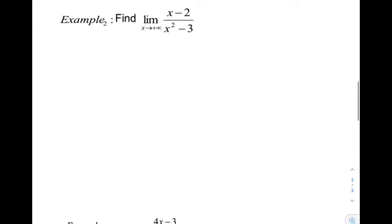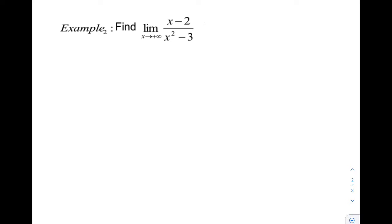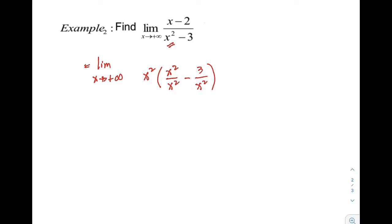Let's move to Example 2. Find the limit of x minus 2, all over x squared minus 3, as x approaches positive infinity. Applying the same procedure, the variable with the highest exponent here is x squared. So if we factor that out, the denominator becomes x squared over x squared minus 3 over x squared. In the numerator, since x squared is what we factored, we divide by x squared as well: x over x squared minus 2 over x squared.